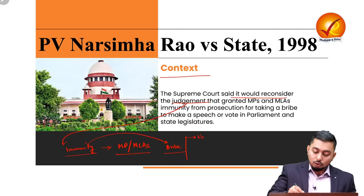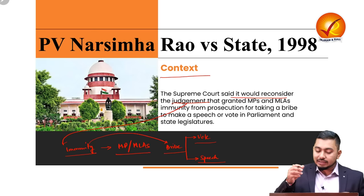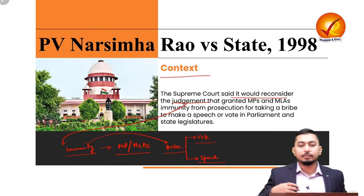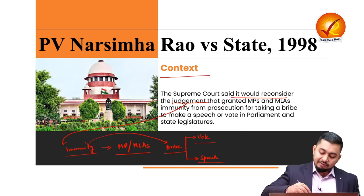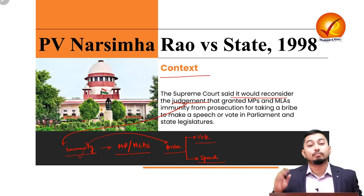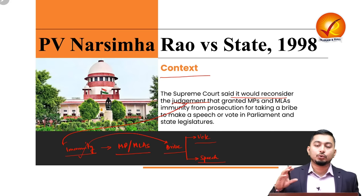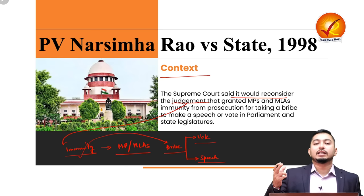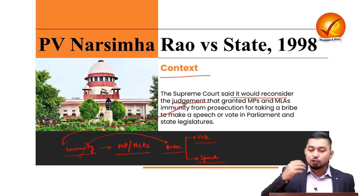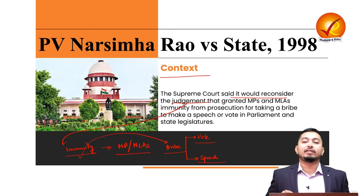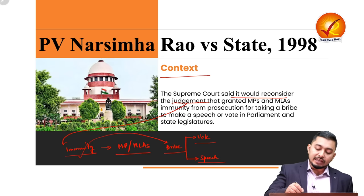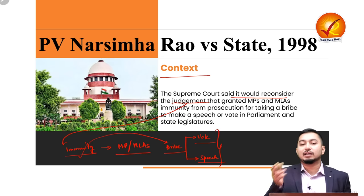The immunity was for exercising a vote or making a speech. For example, if I take a bribe and in return vote in a certain direction, I will have immunity from prosecution for committing the crime of getting bribed. Similarly, if I take money and make a speech, I will again have immunity, provided all those activities are carried out in the Parliament of India.